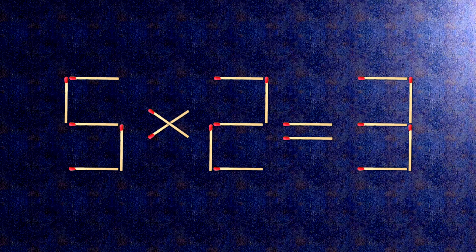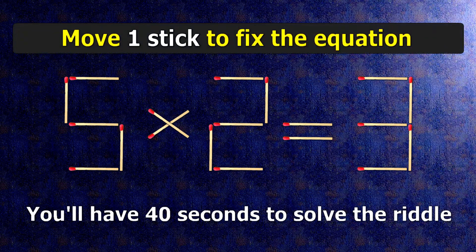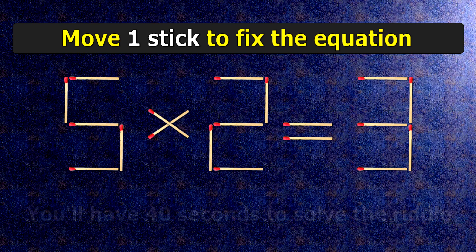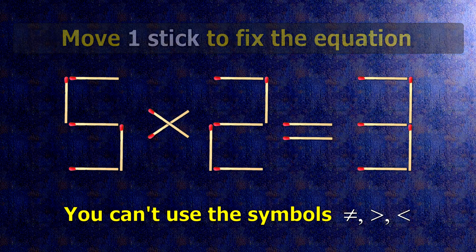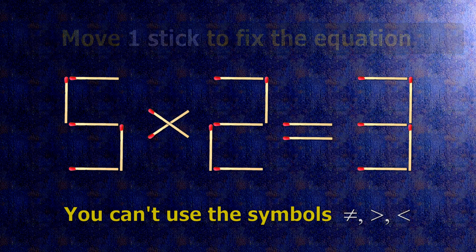We have the equality 5 times 2 equals 3. Our equality is wrong. We need to move one match to make our equality correct.